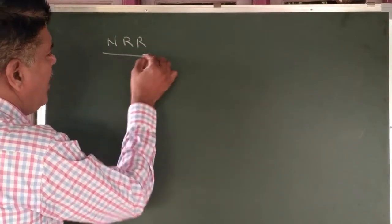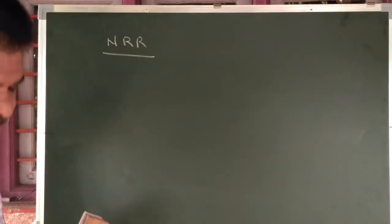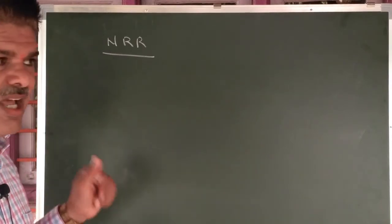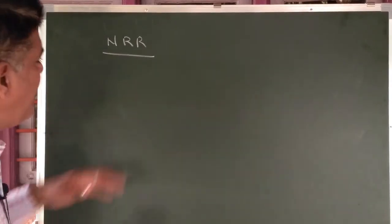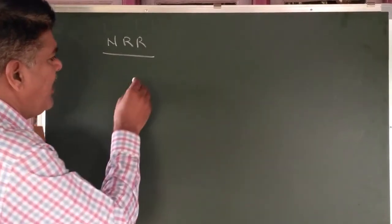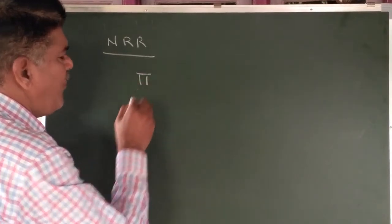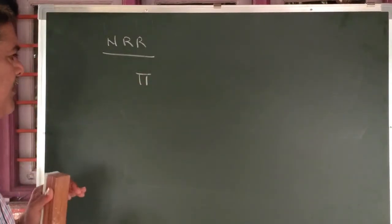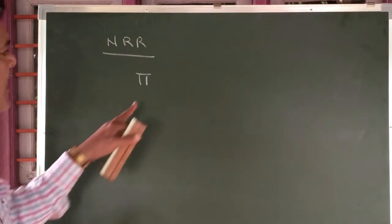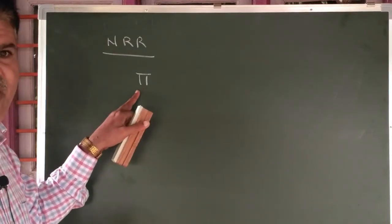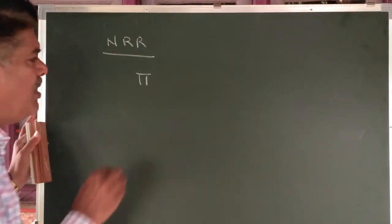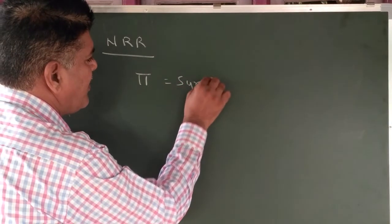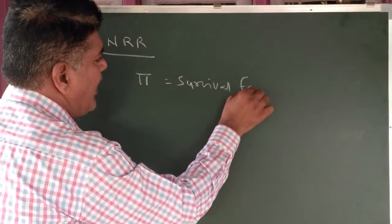That is known as Net Reproduction Rate, called NRR. In NRR, we take into account the survival factor of a girl child. Pi here stands for survival factor.